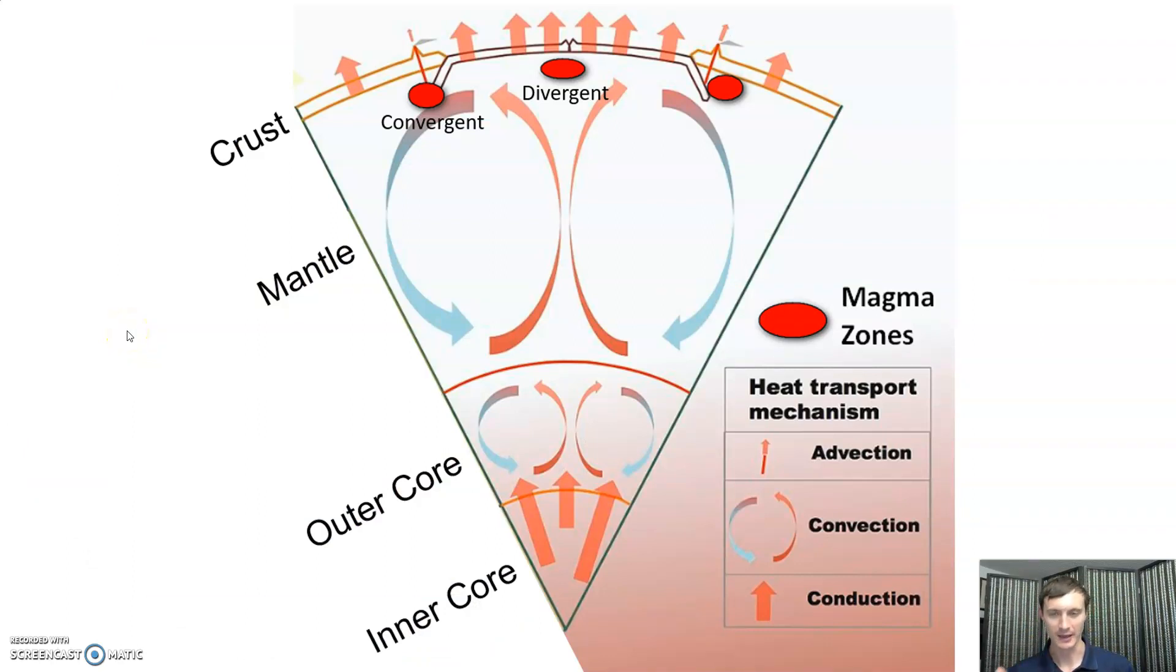Here's another way to visualize this. We have our inner core, outer core, we have our mantle with these big circulating convection cells, and then we have our thin skin, the crust. Our melting zones are going to be here, next to convergent margins mostly, next to divergent margins mostly. And I say mostly, the exception to this are the hot spots, which we'll get into later.